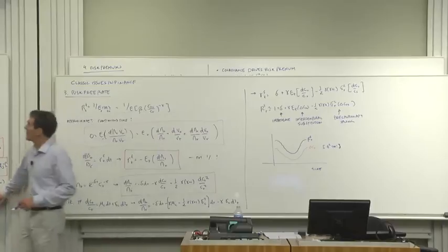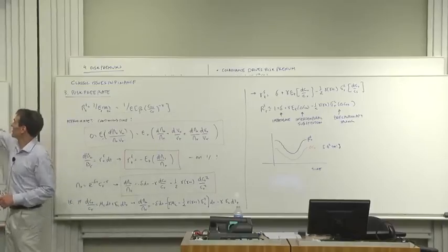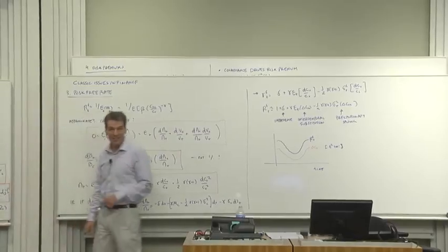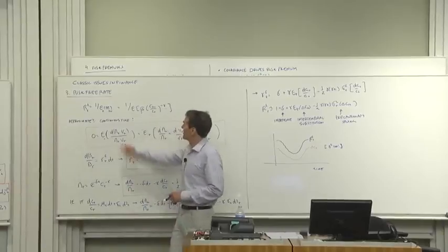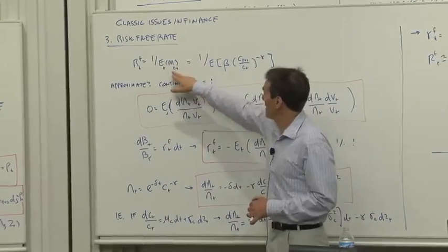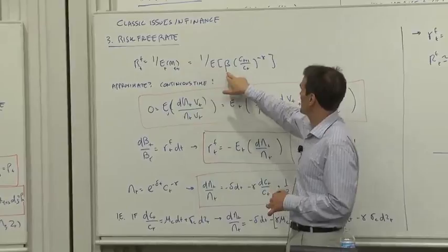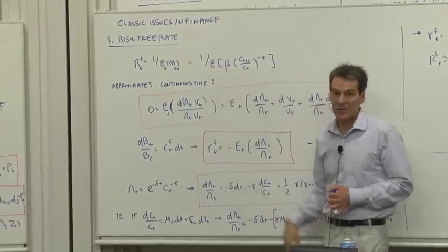Where we got to in thinking about risk-free rates was RF is 1 over E of m. Let's look at that a little more closely. Now our prime model for m, the discount factor, is 1 over expected beta consumption growth to the minus gamma.